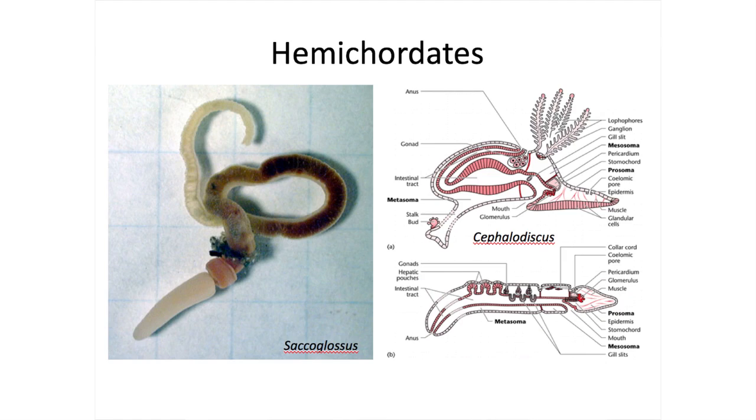The first hypothesis is that chordates, and hence vertebrates, evolved from hemichordates. Hemi means half, so these creatures are essentially half chordates. Most of them are worm-like creatures, such as Scaphioglossus, the acorn worm, which features a large proboscis in the head-like region.